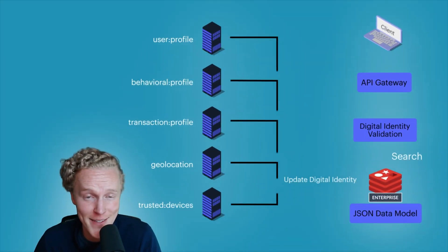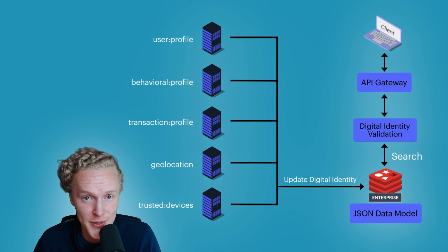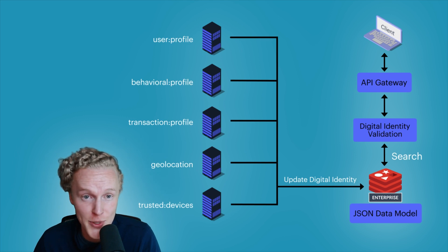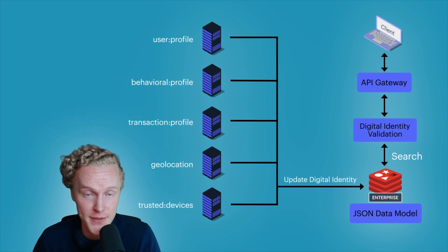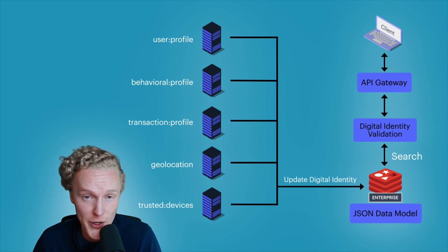Starting with digital identity validation and why it needs to be in real time. Unlike traditional knowledge-based authentication using static information, digital identity uses multiple and frequently updated elements, including behavioral, geolocation, social, and mobile device profiles. Architectures based on disk-based legacy databases don't meet the requirements for high write throughput and low latency for updating and querying dynamic digital identity data.